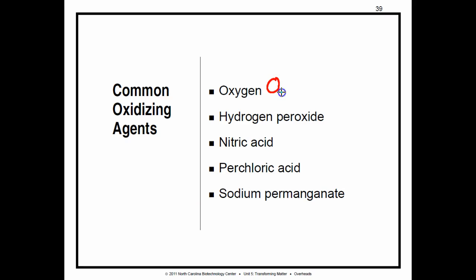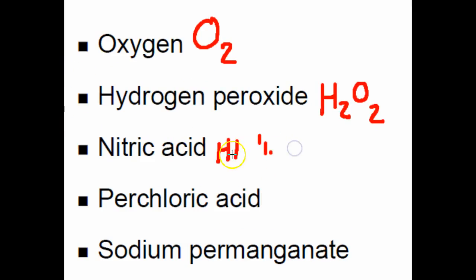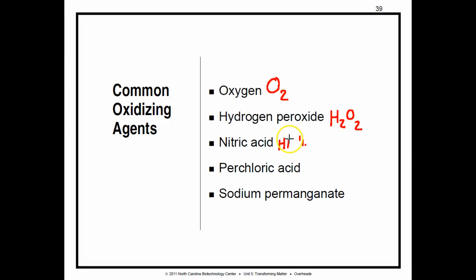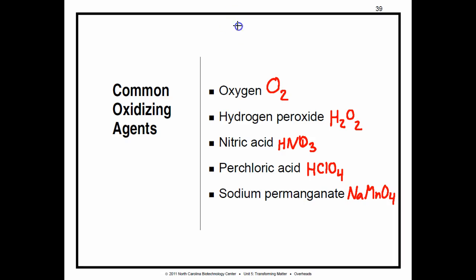Oxygen is O₂. Hydrogen peroxide is H₂O₂ — a lot like water but with an extra oxygen, and that oxygen is a peroxide. Nitric acid is HNO₃. Perchloric acid is HClO₄ — one chlorine and four oxygens. Sodium permanganate contains manganese with four oxygens. Every one of them contains oxygen.